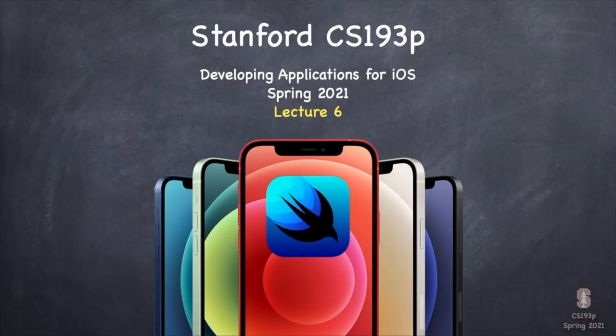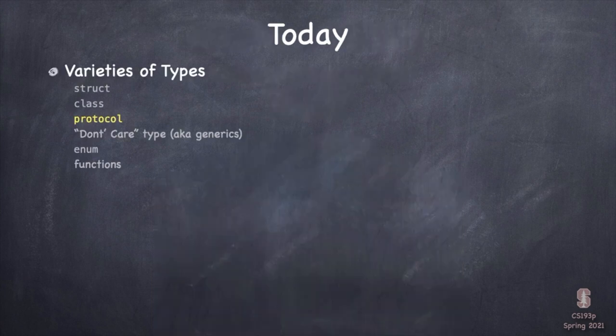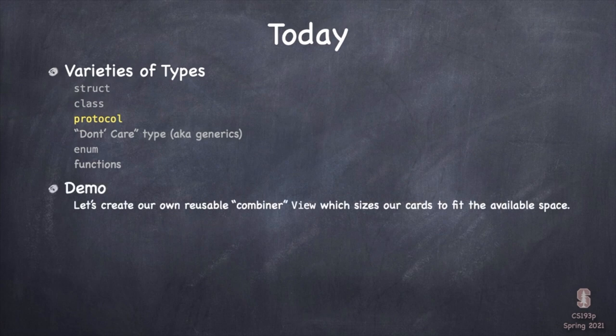Stanford University. Lecture 6 of Stanford CS193P Spring of 2021. Today, our primary topic is going to be finishing out our list of varieties of types by talking about protocols — very important in SwiftUI and probably the kind of type that's most different from other languages. We're going to hop into a demo and build our own reusable container view like an HStack or LazyVGrid, and that's going to use protocols quite a bit.